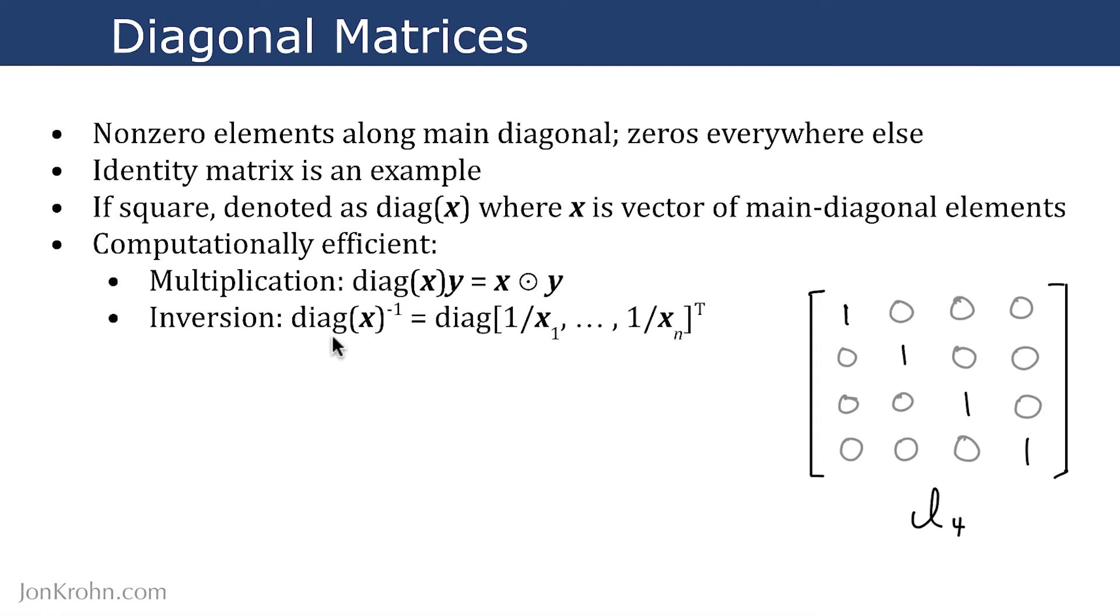Inversion is also computationally efficient. To invert a diagonal matrix, we simply take all of the elements along the main diagonal and invert them individually. So x1 becomes 1 divided by x1, all the way through to xn, becoming 1 divided by xn. And then we transpose it. One critical item to note here is that you can't divide by 0, so if anything along the main diagonal includes a 0, then that diagonal matrix cannot be inverted.